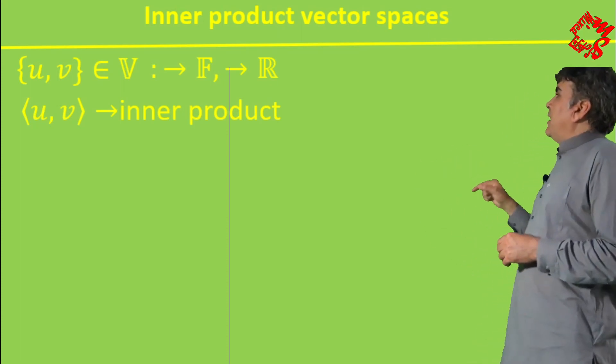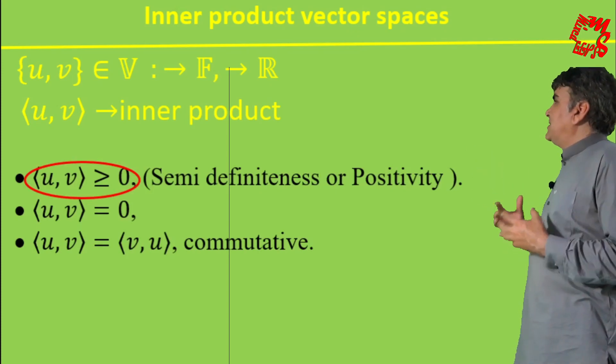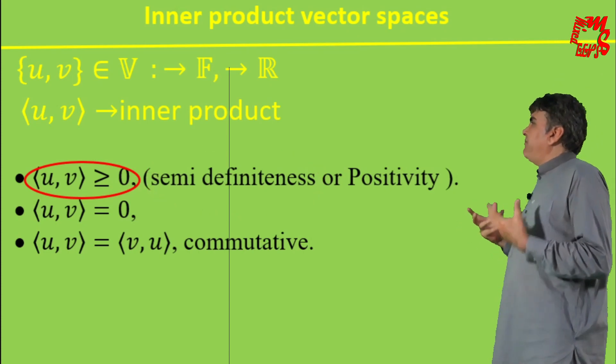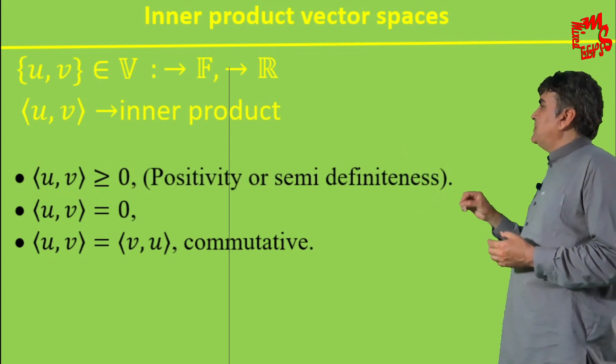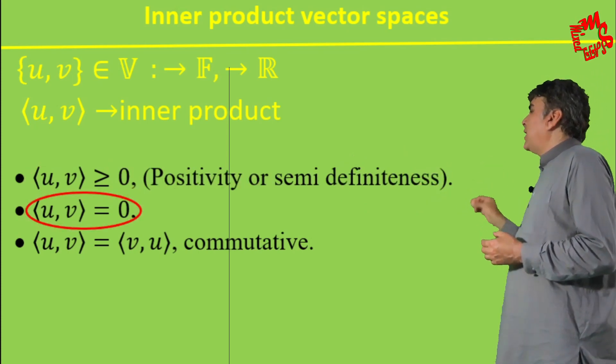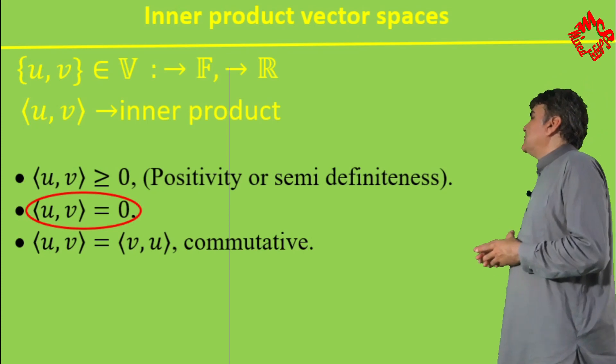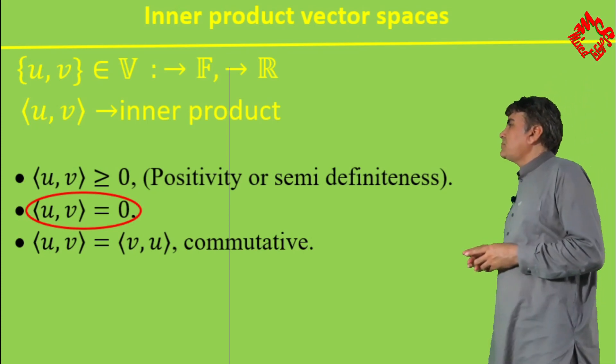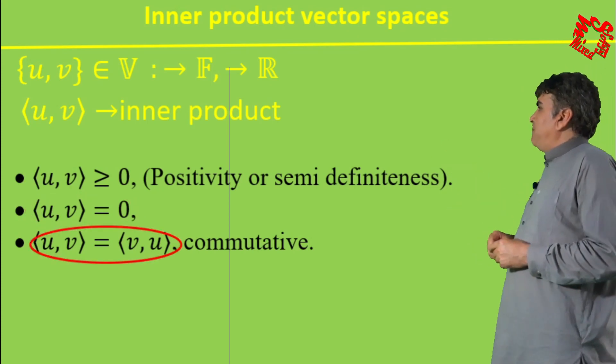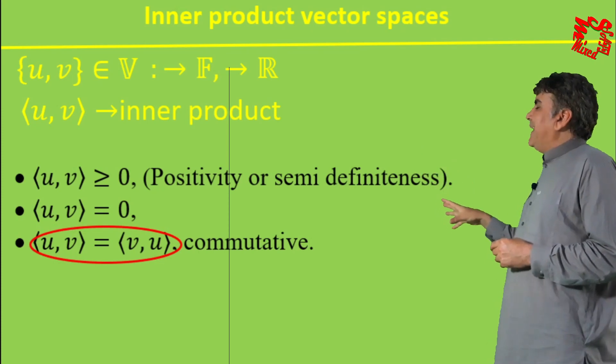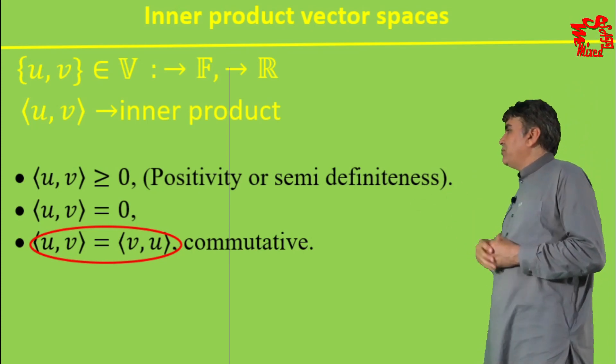The inner product of U and V is always either greater or equal to zero. This property is called semi-definiteness or positivity. The inner product equals zero only if either one of the two vectors is a null vector or zero vector, or both of them are zero vectors. The inner product obeys the commutative property; that is, changing the order of the elements of the vector space doesn't affect the result, so they commute with each other.